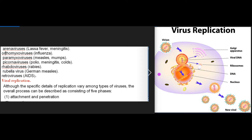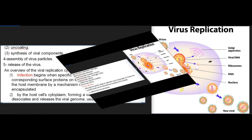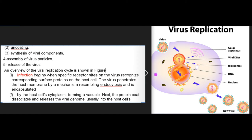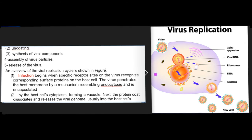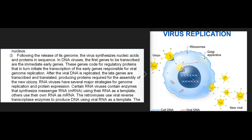Viral replication: Although the specific details of replication vary among types of viruses, the overall process can be described as consisting of five phases: (1) attachment and penetration, (2) uncoating, (3) synthesis of viral components, (4) assembly of virus particles, and (5) release of the virus. Infection begins when specific receptor sites on the virus recognize corresponding surface proteins on the host cell. The virus penetrates the host membrane by a mechanism resembling endocytosis and is encapsulated by the host cell's cytoplasm, forming a vacuole. Next, the protein coat dissociates and releases the viral genome, usually into the host cell's nucleus.